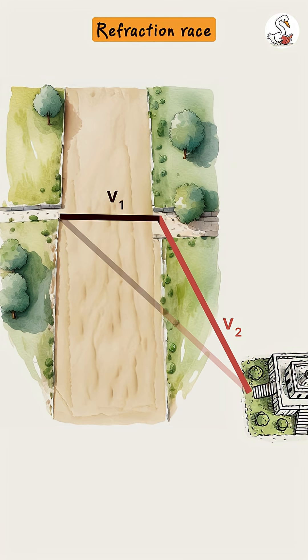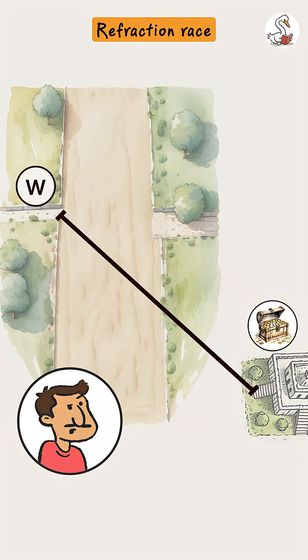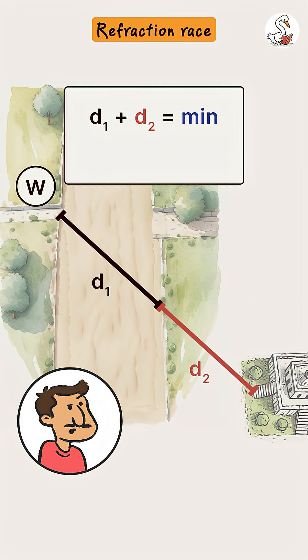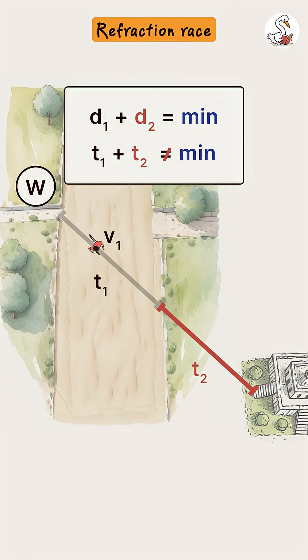Because of this, there were many possible paths to reach the treasure, each taking a different amount of time. Amar decided to take the shortest path, a straight line. But that straight line path wouldn't take the least time, because he would have to spend more time running through the slower sand.